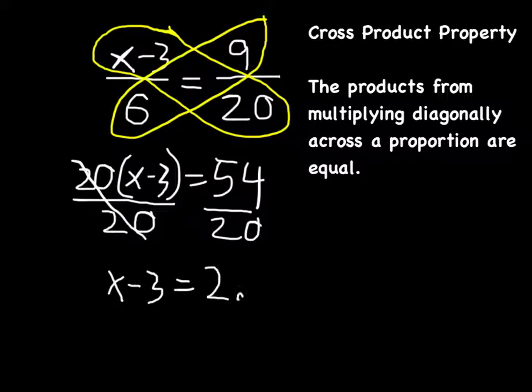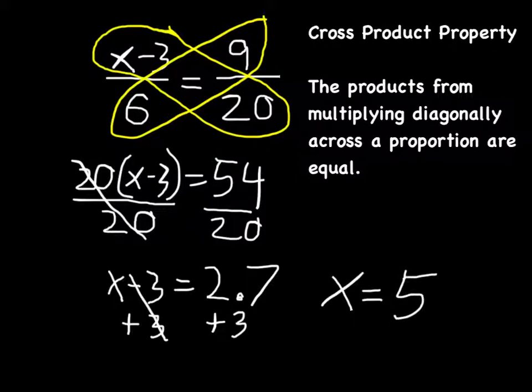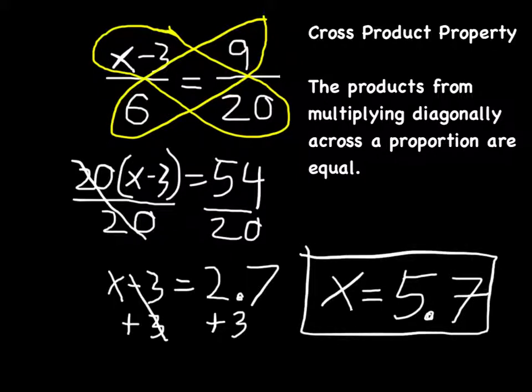Now I can simply add 3 to both sides. And on the left side, the 3 cancels, leaves me with x equal 2.7 plus 3, or 5.7. And that is our answer. x is equal to 5.7.